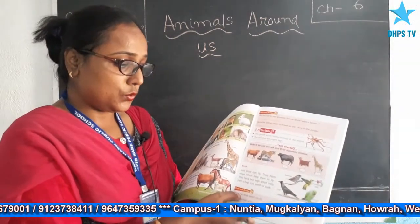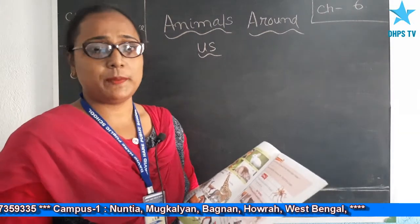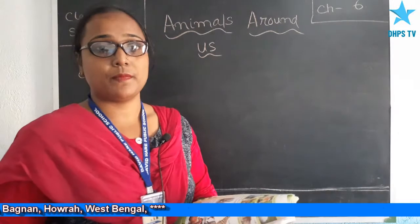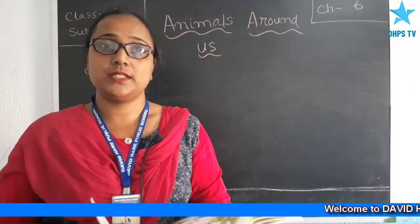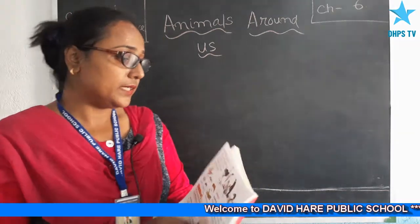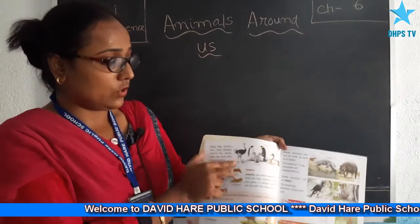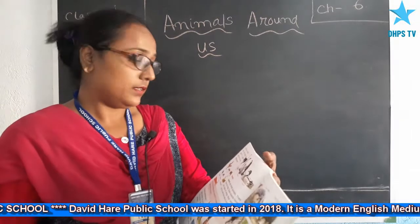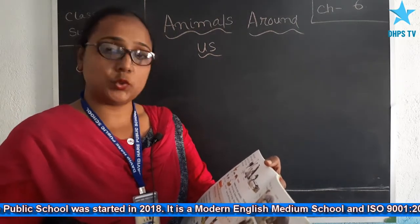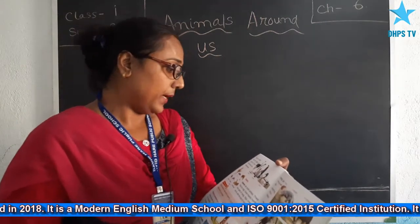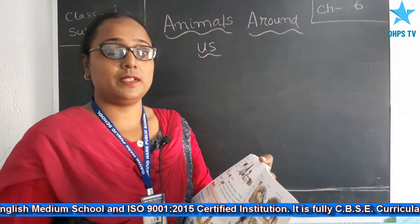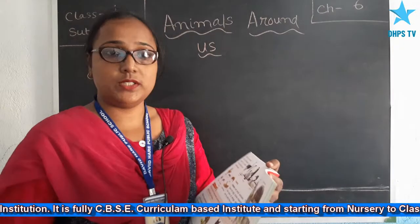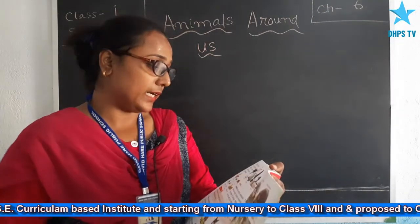Think and answer: name two birds which can fly — crow and sparrow. Name two birds which can swim — duck and swan. Birds like ostrich, kiwi, and penguin cannot fly. Some birds like duck and swan can swim. So ostrich, penguin, and kiwi are birds, but they cannot fly.